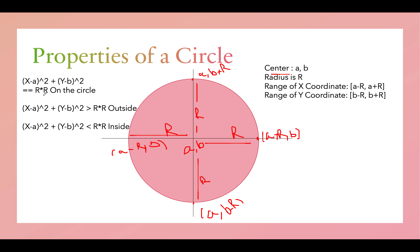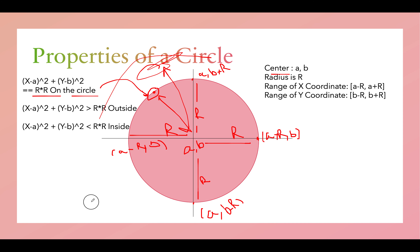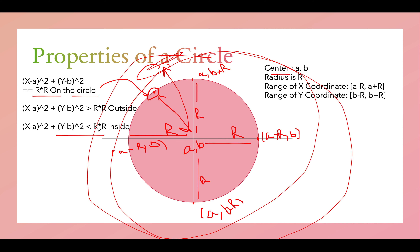Let's recall a property from high school math. For any point (x, y): if (x-a)² + (y-b)² equals r², then the point lies on the circle. If it is greater than r², the point lies outside the circle. And if (x-a)² + (y-b)² is less than r², that means the point lies inside the circle. That's the property we'll use.